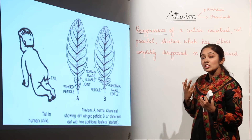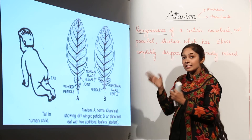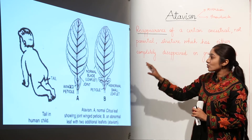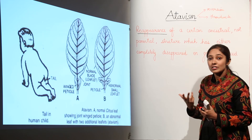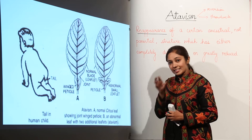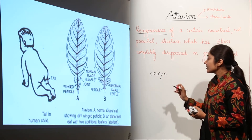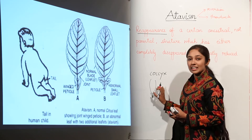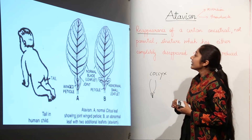Let us take an example. Some babies are born with a tailbone. This tailbone was considered an ancestral character, but now it is not present in most individuals. So the presence of a tailbone in some individuals is an example of atavism — reappearance of a certain ancestral trait. Sometimes babies are born with a tail or tailbone, also known as coccyx, which is formed at the end of the vertebral column. A few segments fuse together to form the tailbone. The appearance of the coccyx or tailbone in certain babies is an example of atavism.